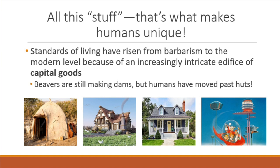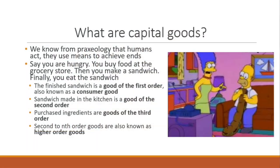Beavers are still making dams, but humans have moved past huts. We were constantly evolving by creating better and better tools and better stuff. So we want to look at this structure because when we buy a consumer good from the store — say bread at the grocery store — we don't think about the fact that the bread wasn't created instantaneously. There's this entire complex structure of production involving all these capital goods that had to have been made in order to make the bread.